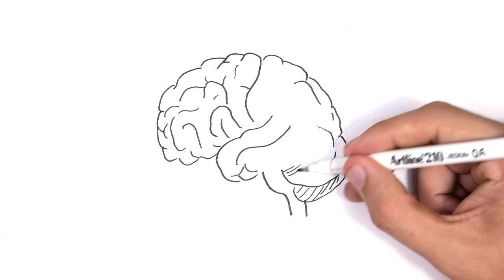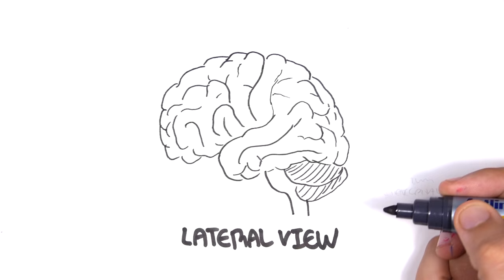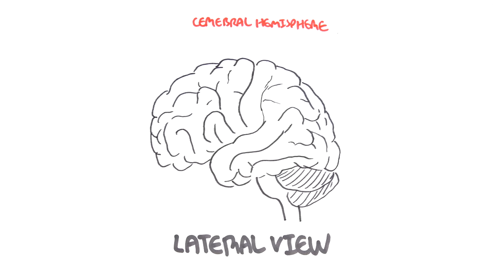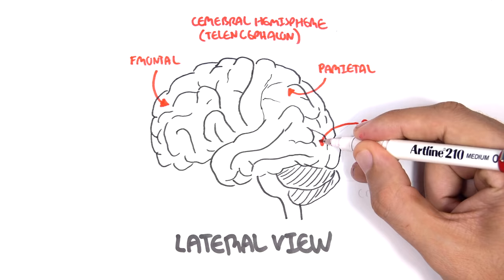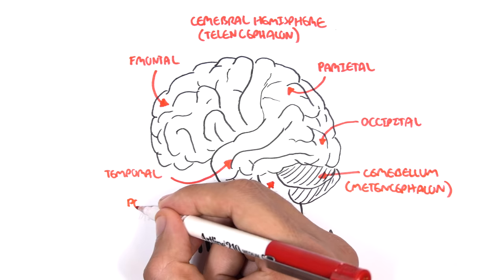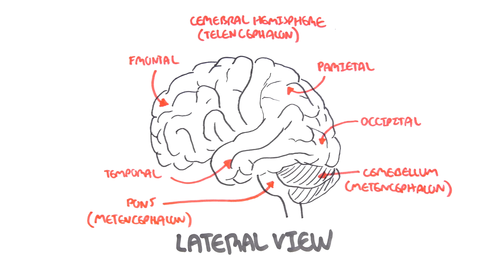Here we're looking at the lateral view of the brain. The cerebral hemispheres originate from the telencephalon — this is embryology. We have four main lobes: the frontal, parietal, temporal, and occipital. Then you have the cerebellum, which is part of the metencephalon. The pons is also part of the metencephalon. These terms are used to explain where structures originate in embryology.